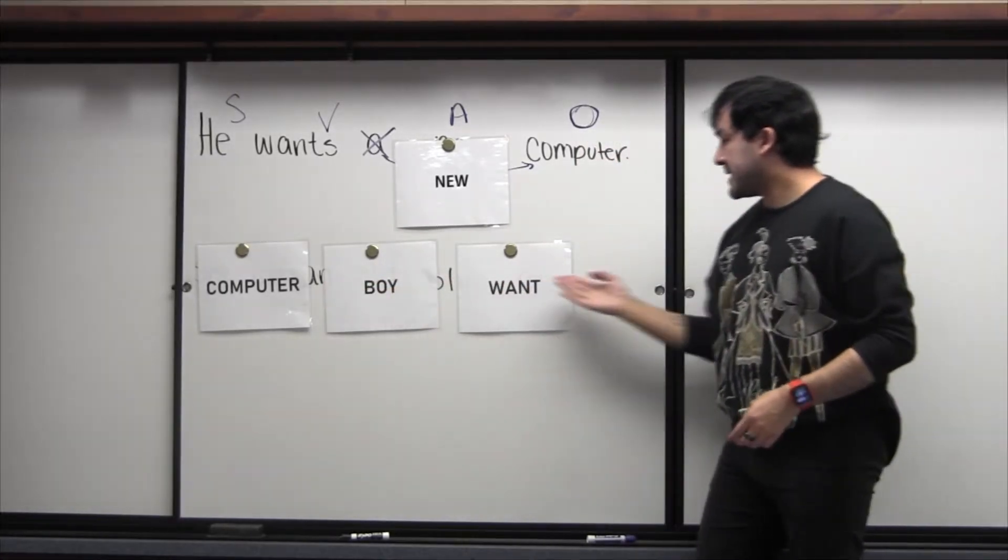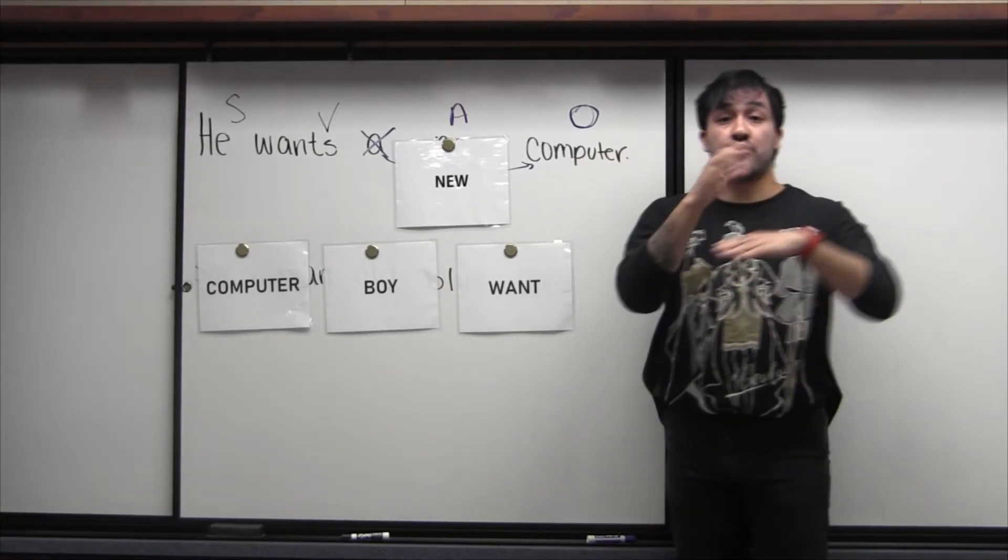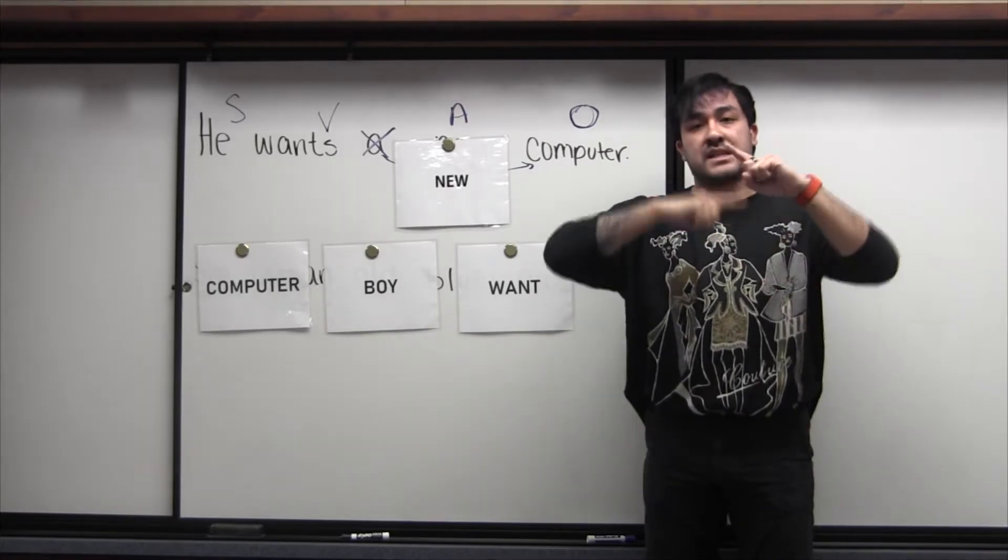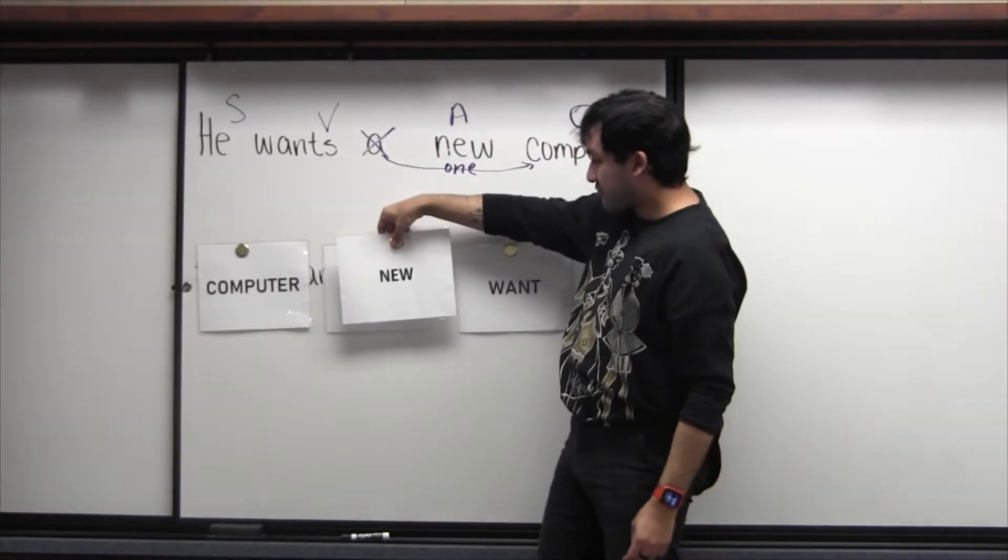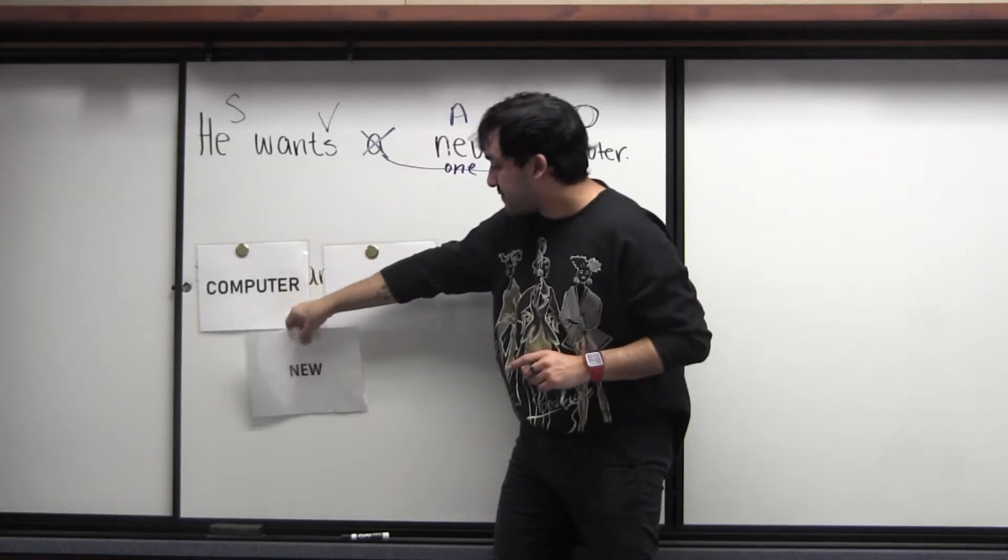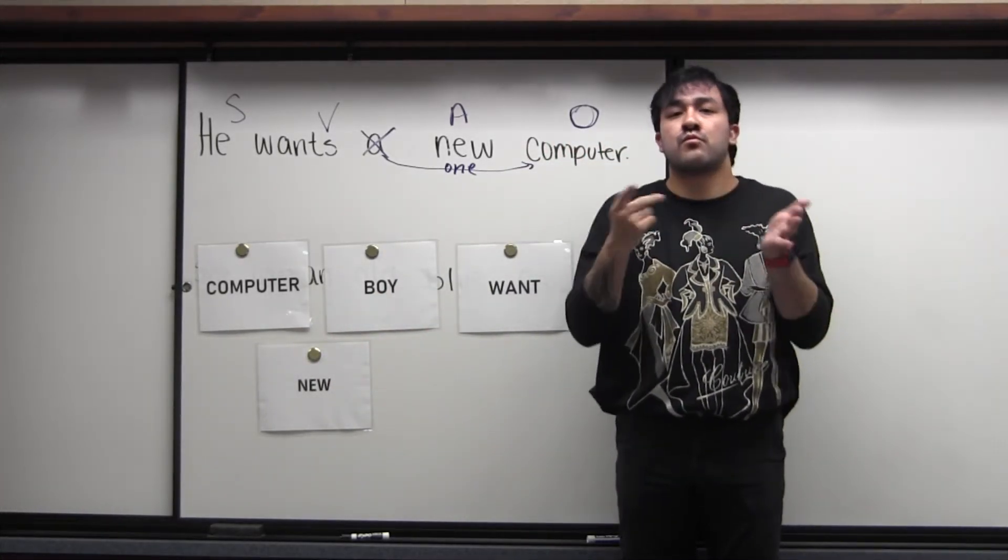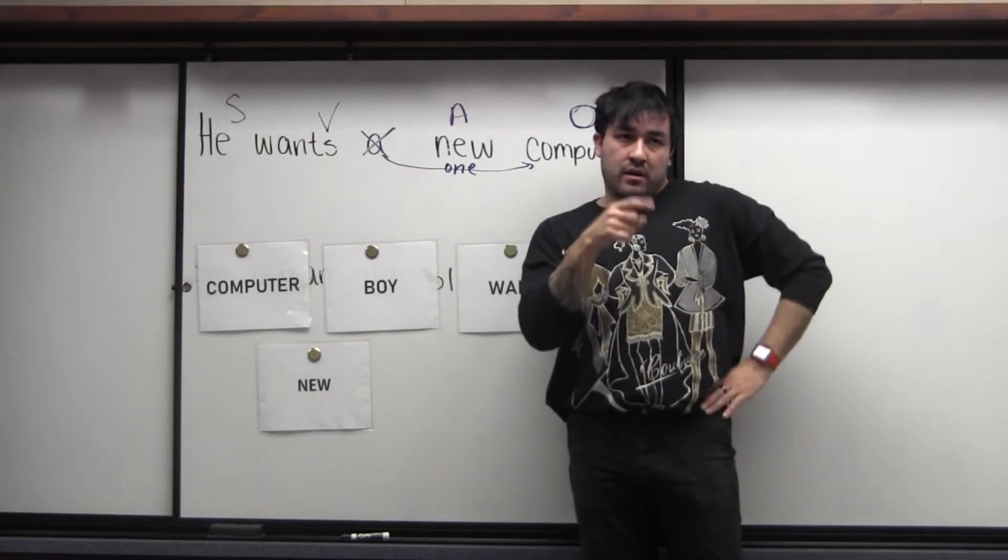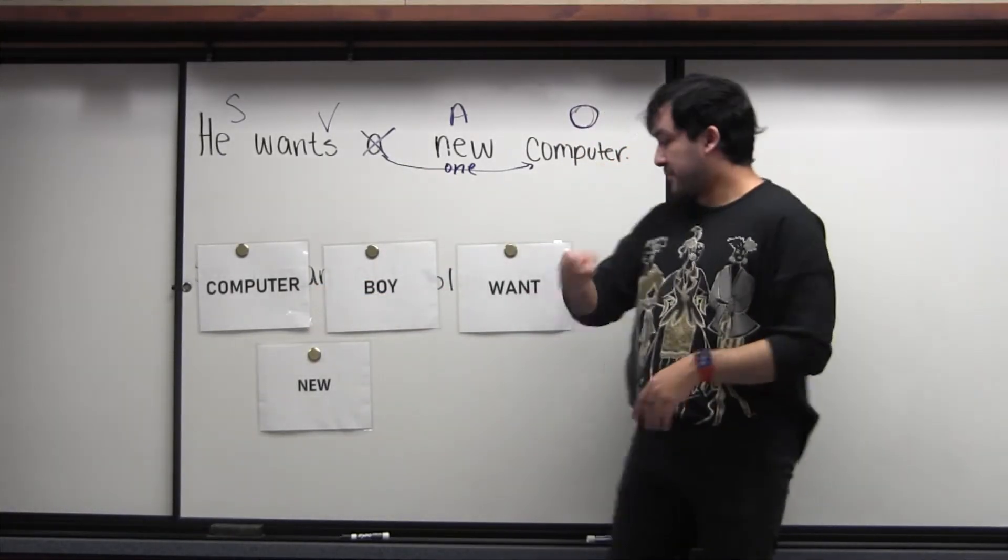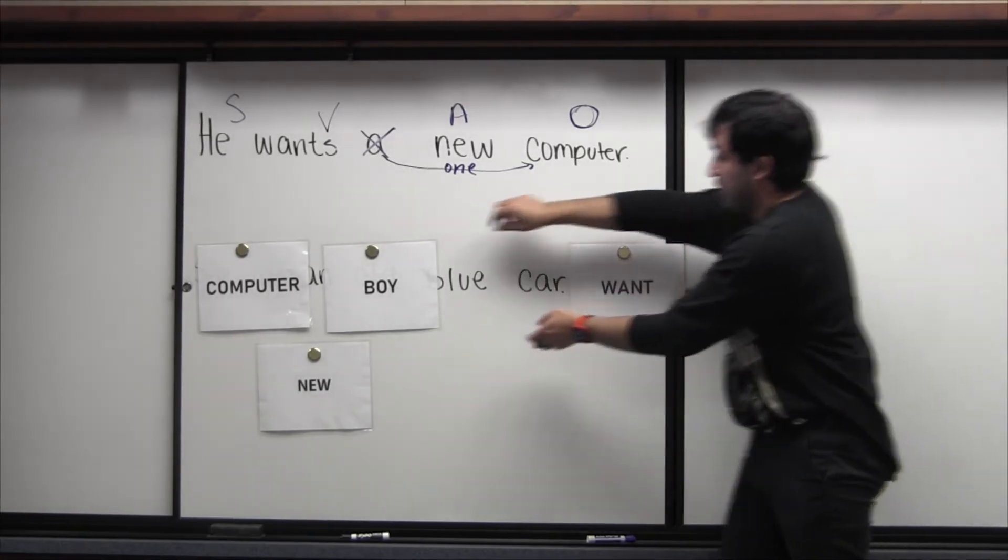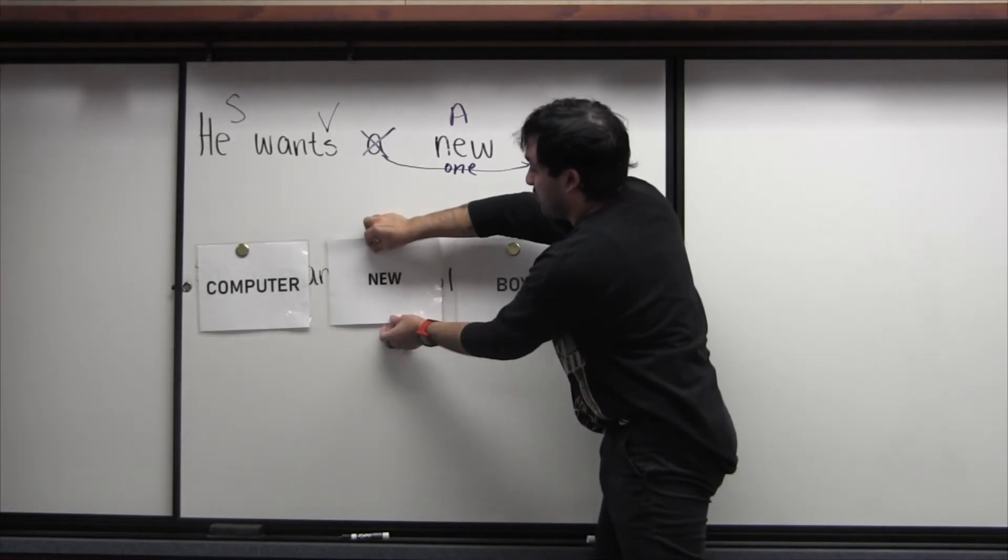And then finally, we have our adjective. So where does the adjective go in this sentence? Well, if we remember, the computer is new. Is a computer new or new computer? So if you sign new, then what? What does that mean? If you start with a sign for new, I have to wait and watch you to tell me what is new. And so what we're going to do is actually put it after computer. So let's go ahead and slide want over and let's go ahead and slide boy over.